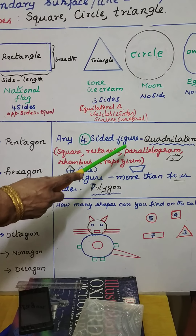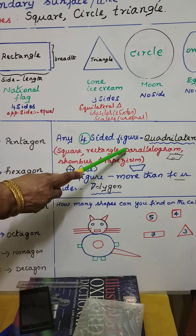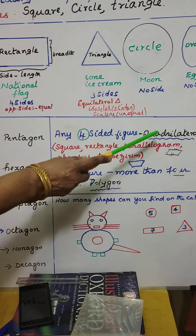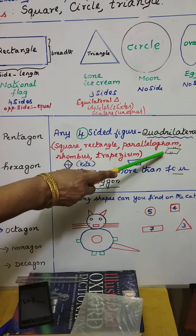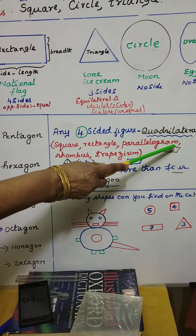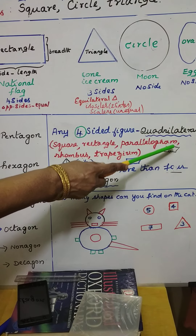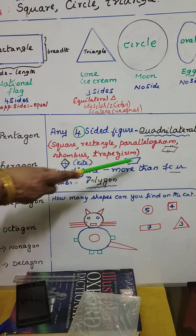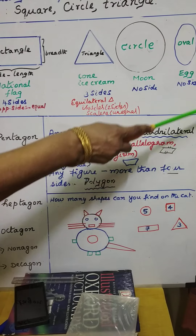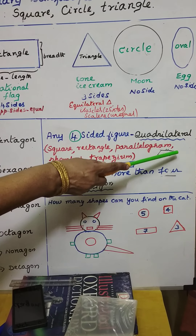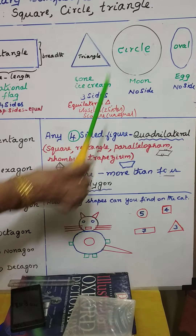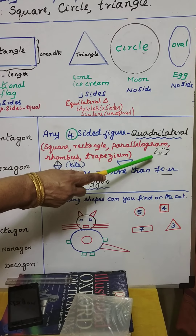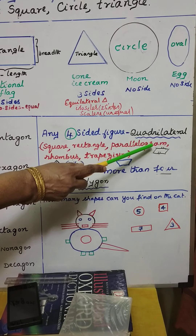Under quadrilateral, one more shape is there — that is called a parallelogram. A parallelogram is a four-sided figure where opposite sides are equal as well as parallel. Parallel means the lines will never meet. If you extend these two lines, they will never meet at all. The best example for parallel lines is a railway track, which will never meet.